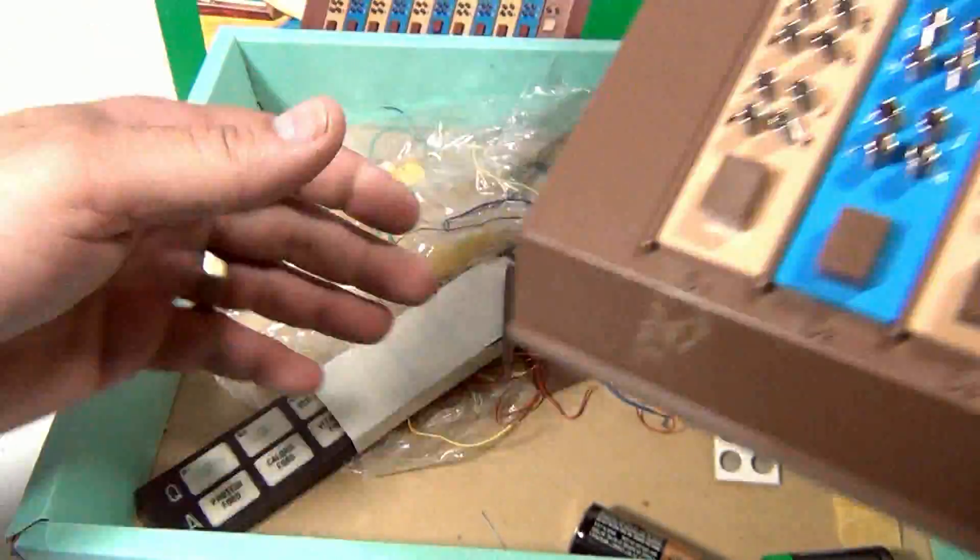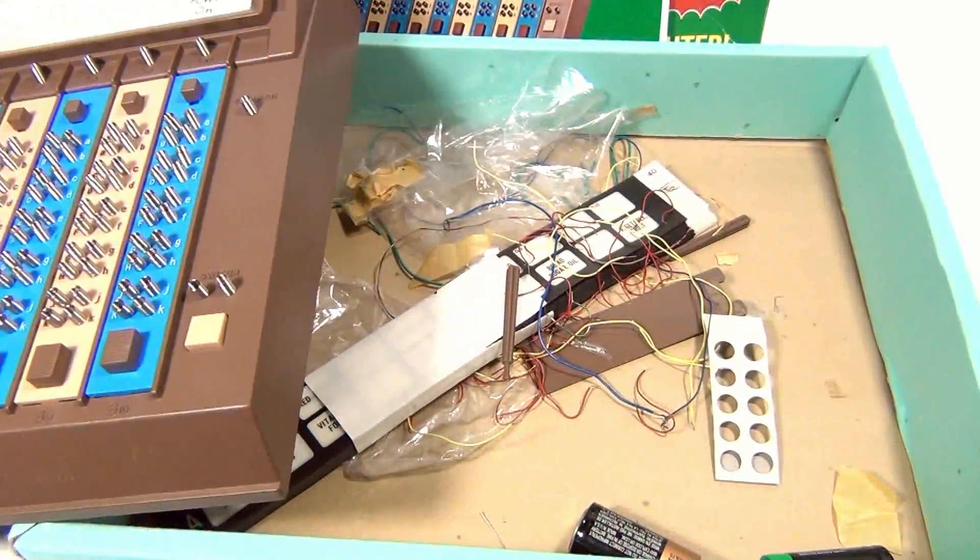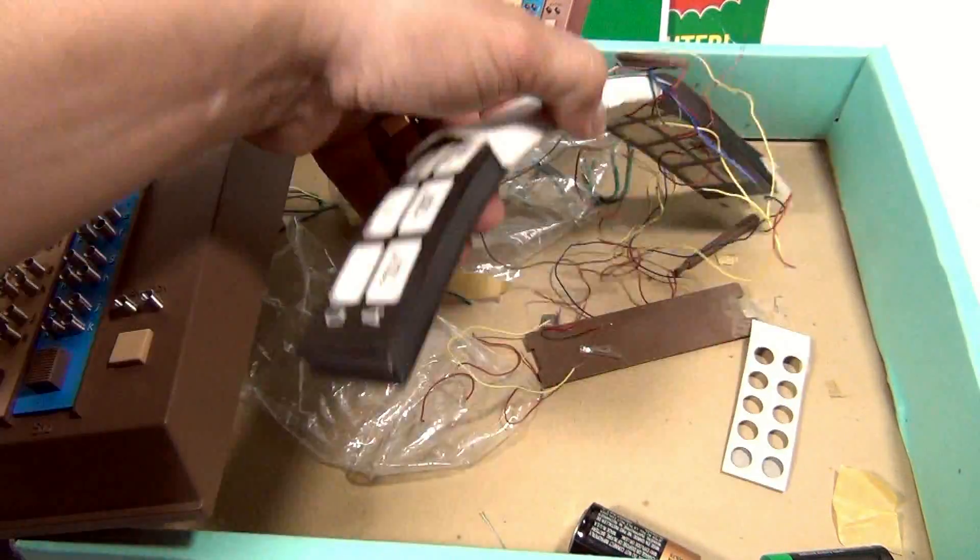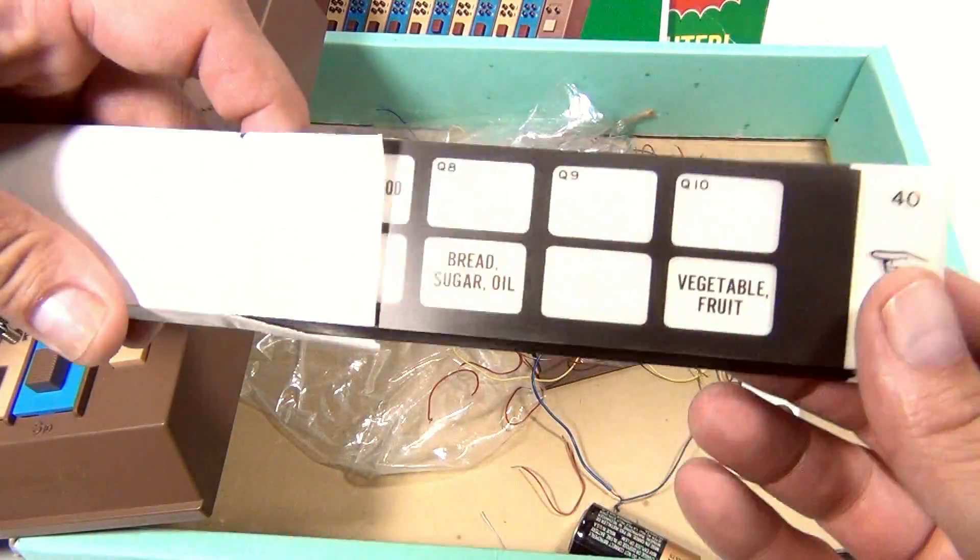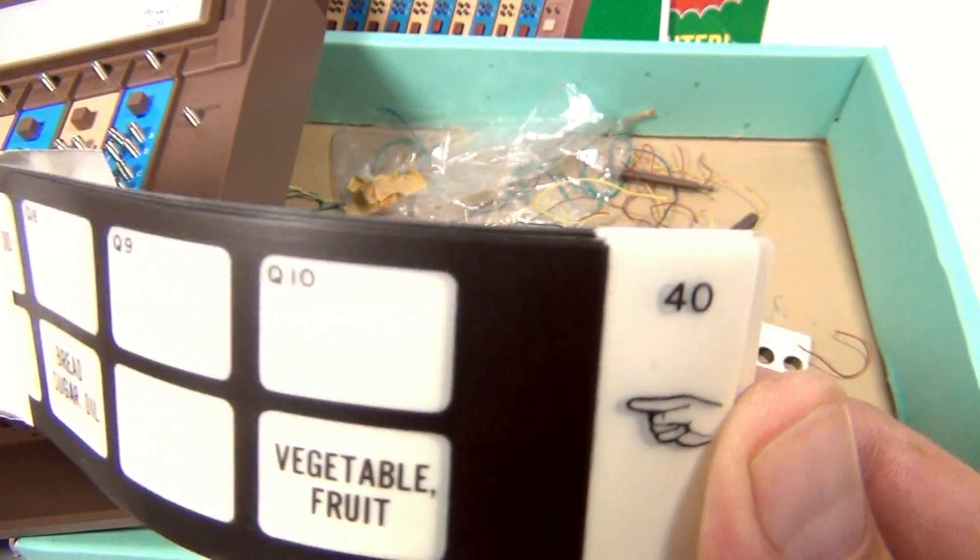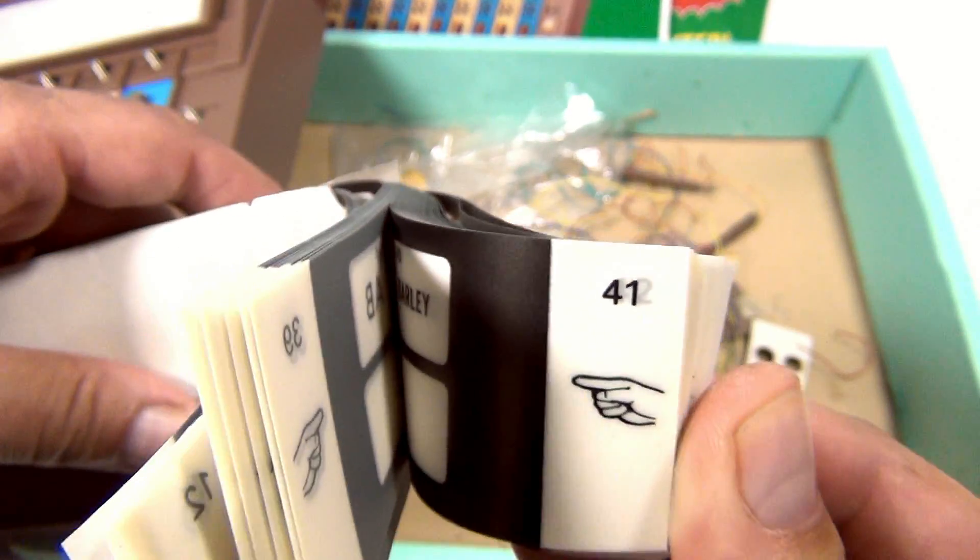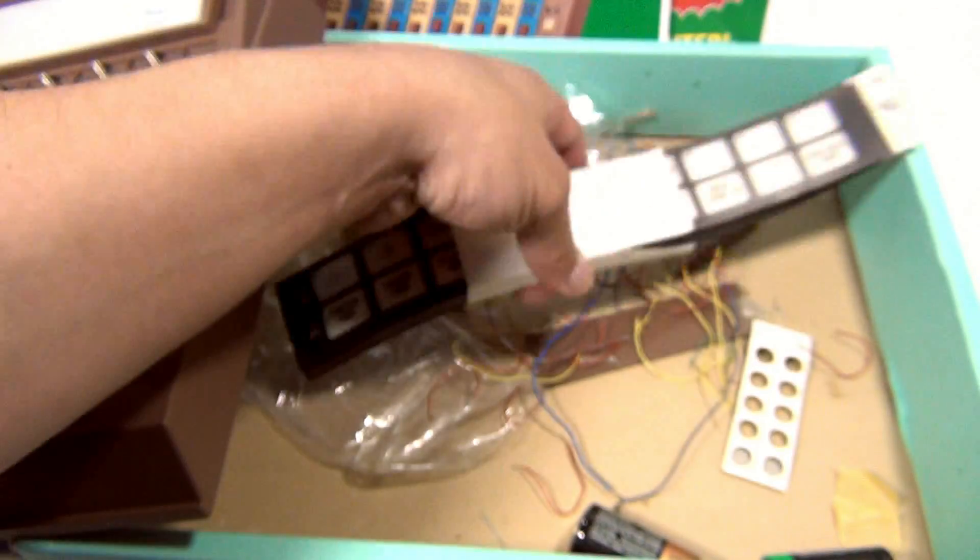So in the box then were these pieces and then these overlays. See, this one's got overlay 40. There's quite a few in here, I haven't checked them all yet.